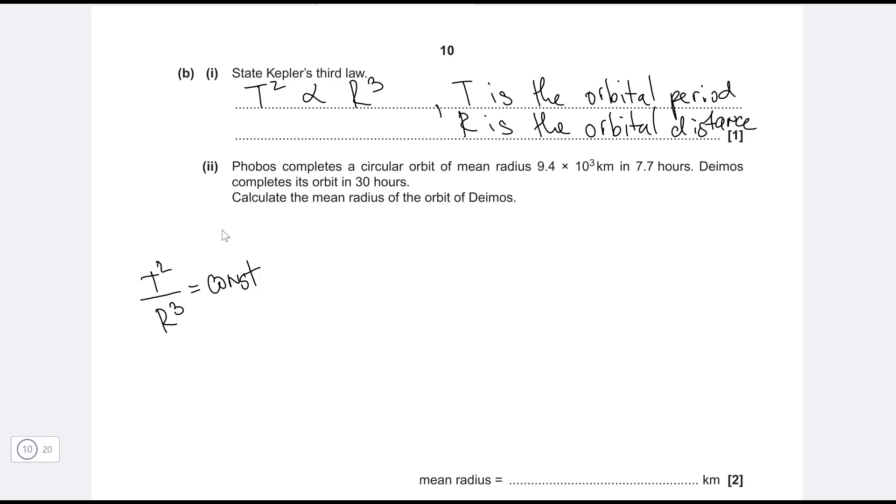Now, every time some expression is equal to a constant, we can always rewrite this. Let's say that this quantity will be the same in both cases. So t squared, the orbital period of Phobos—let's give it a subscript P—divided by the orbital distance cubed of Phobos will be equal to t for Deimos squared divided by the orbital distance of Deimos cubed.